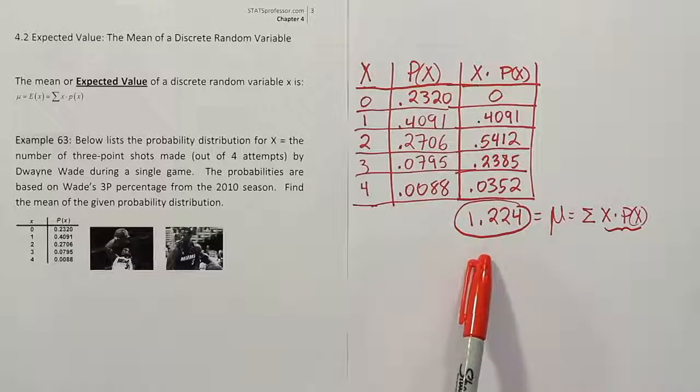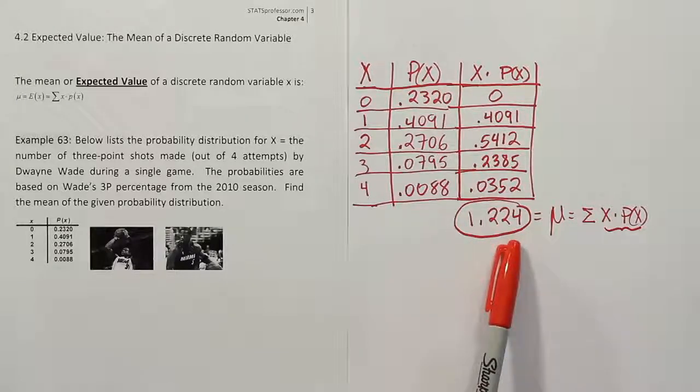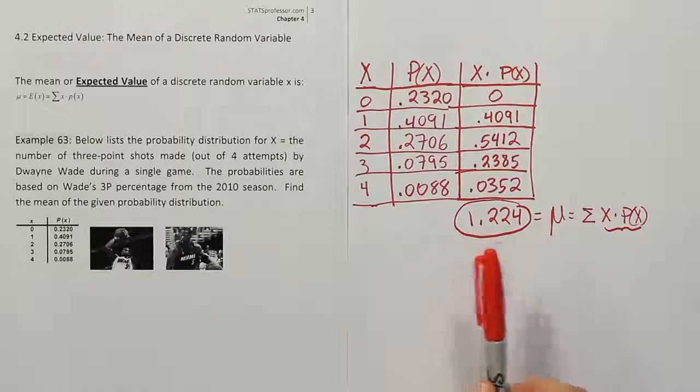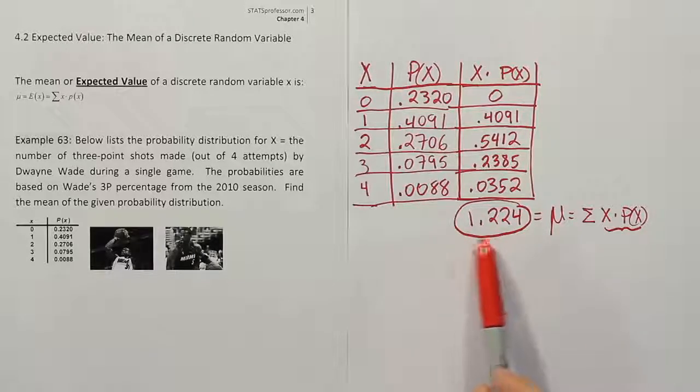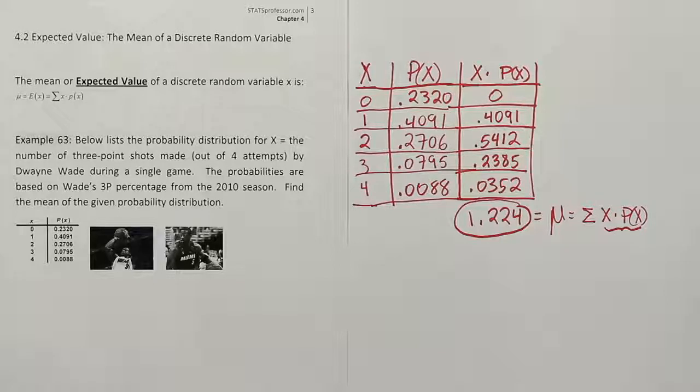Another advantage to this number is you could actually use it in trade negotiations. If the number was quite high, Dwayne Wade could go into a negotiation with another team and say, hey, you want me on your team because look at, on average, how many three points I make out of four attempts. If the number was particularly high compared to peers in the same price range, he might say, I need a higher salary because I'm more valuable because of his point scoring total.